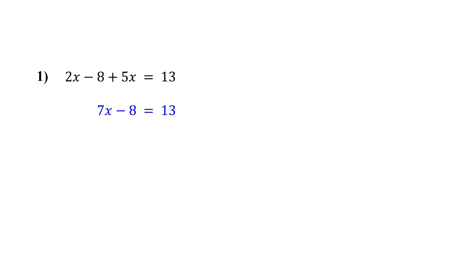So the next step is to isolate the variable term. Notice that 8 is being subtracted from 7x. So to isolate 7x, we do the opposite of subtraction — we add 8. And we add to both sides to keep the equation balanced. Remember, whatever operation you do to one side, you must also do to the other side.